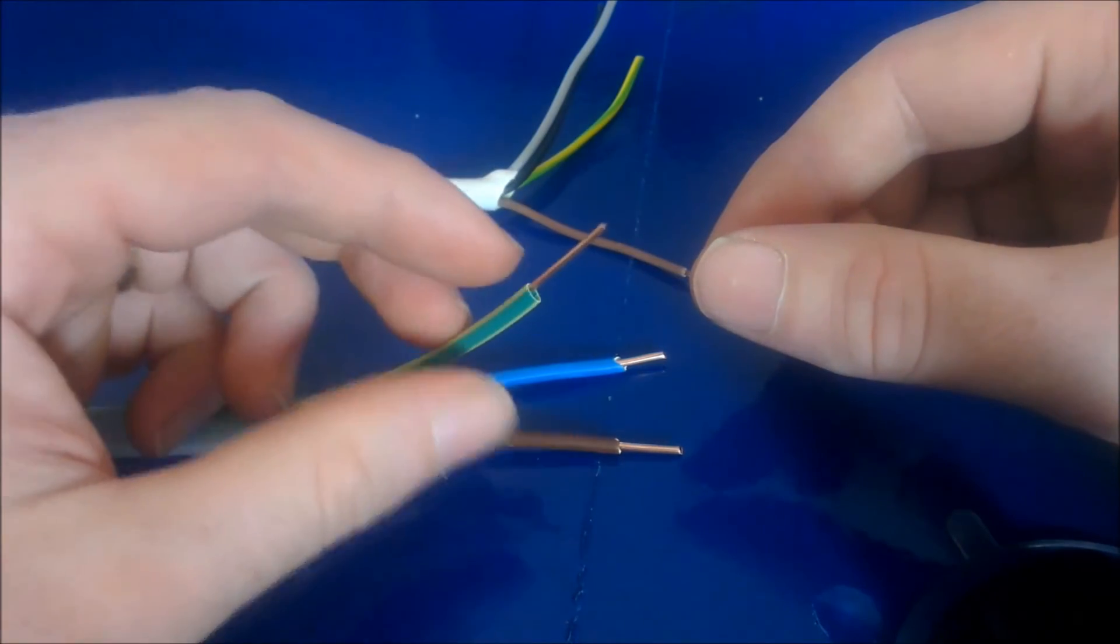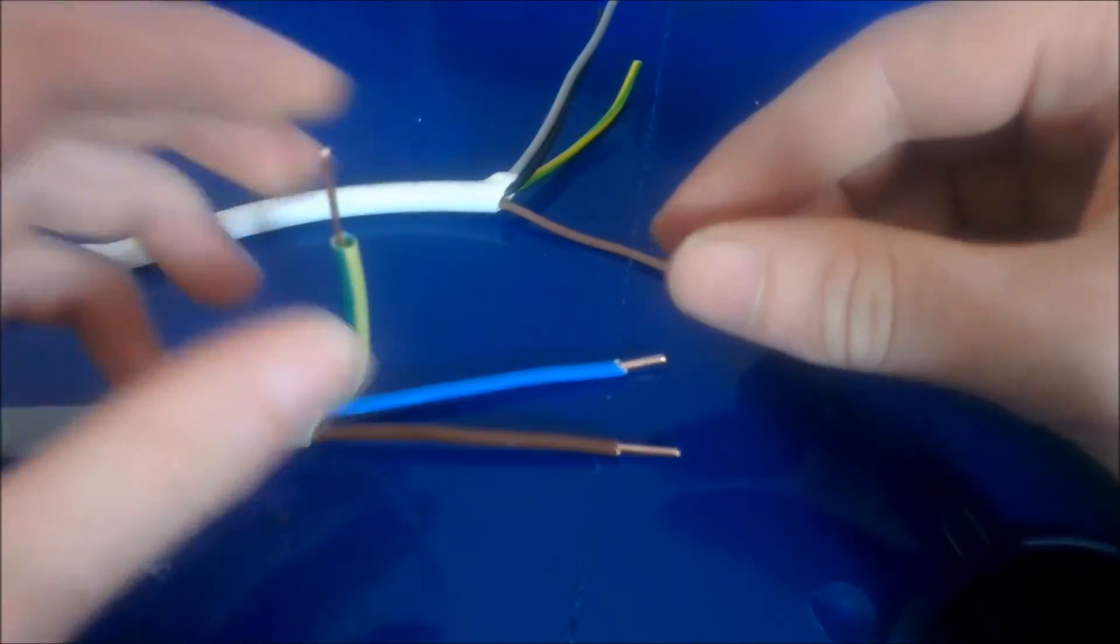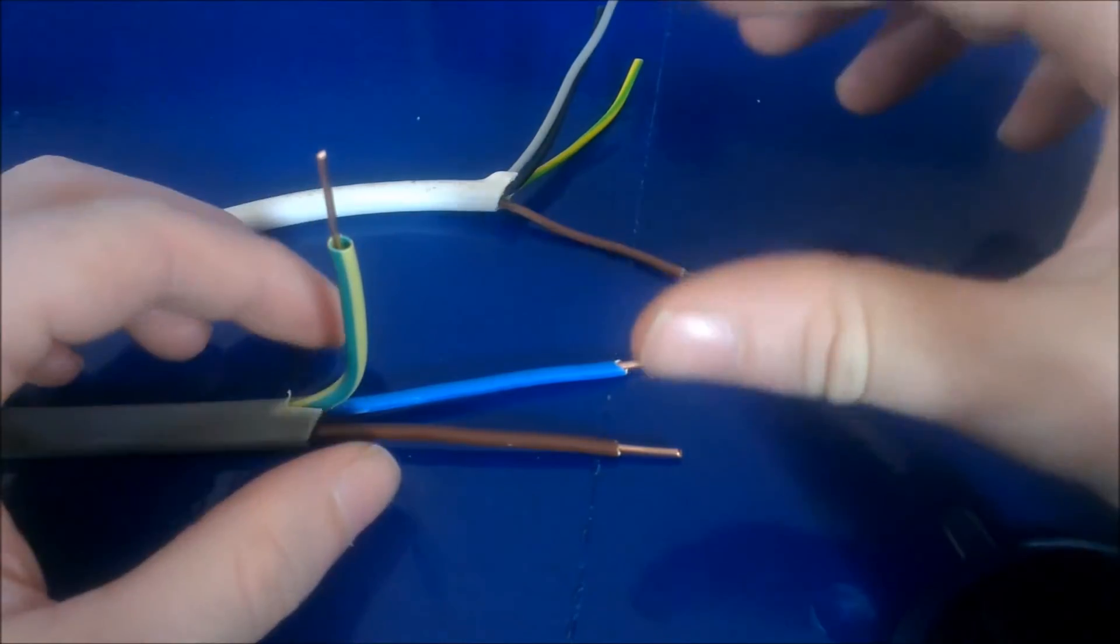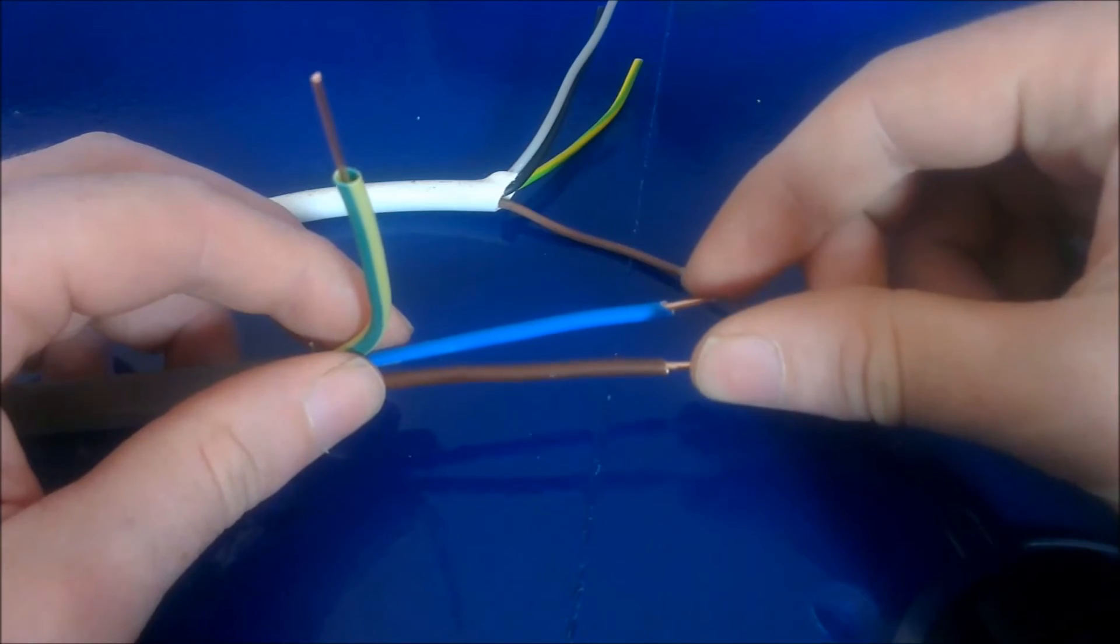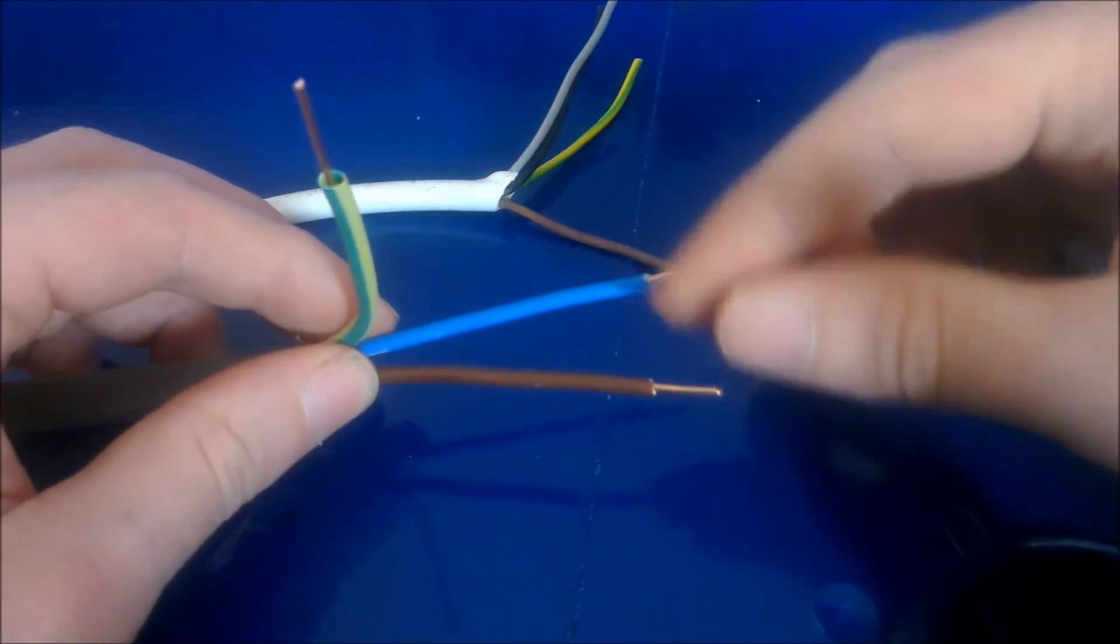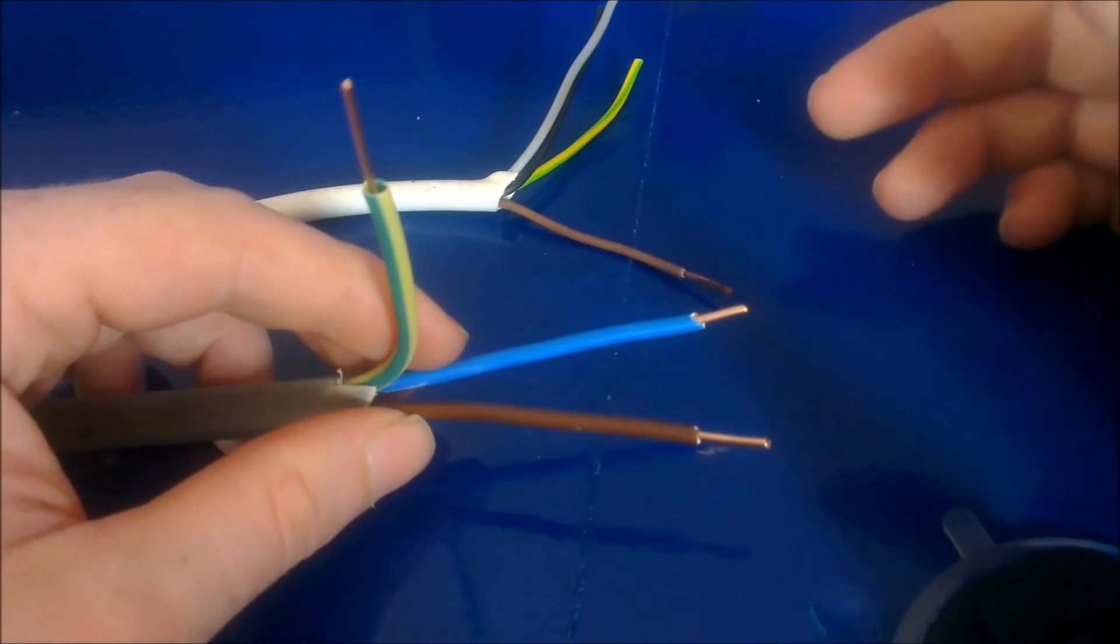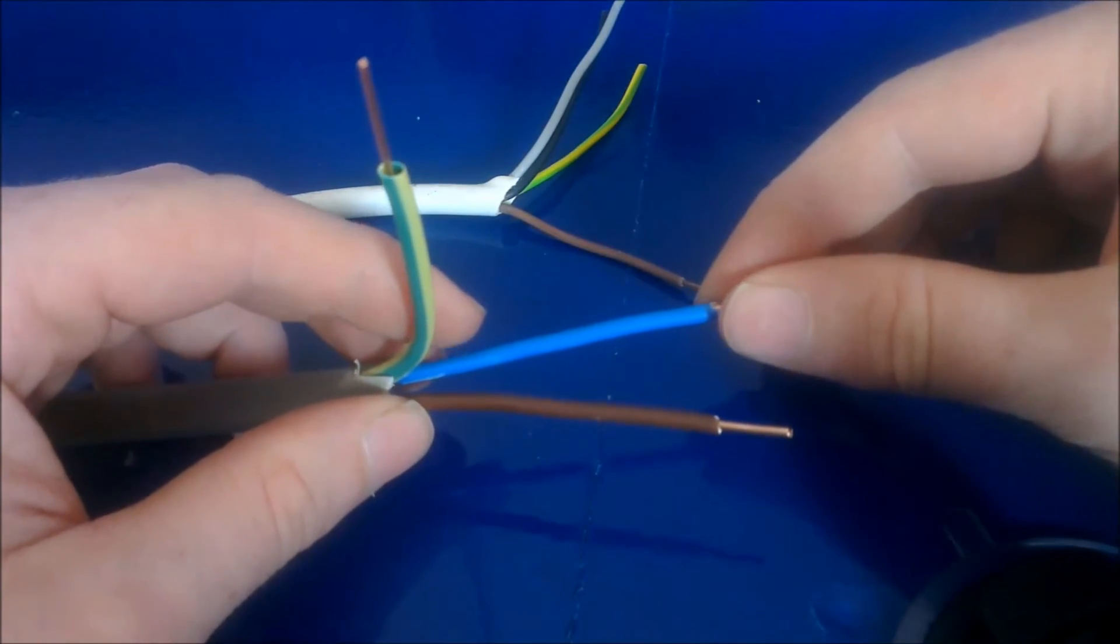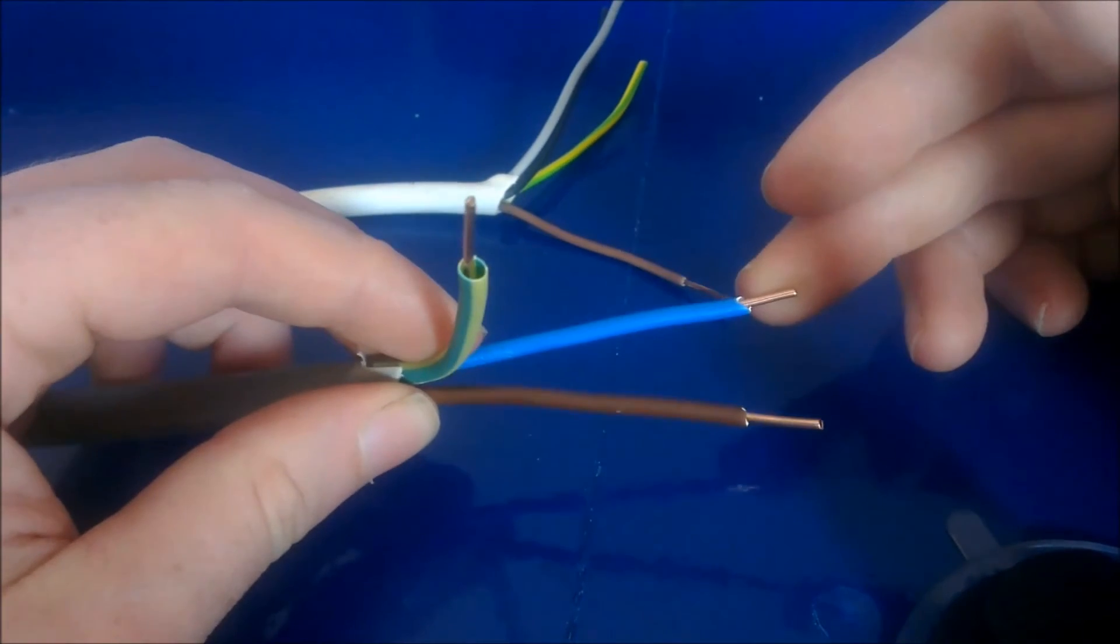And then the earth is 1.5mm. So 1.5mm is the type of cable—you can get 1.5mm twin and earth, exactly the same, only the live and neutral conductor is 1.5mm and the earth is smaller again, it is 1mm. That would be the type of cable used for lighting circuits, so it's slightly smaller than this.